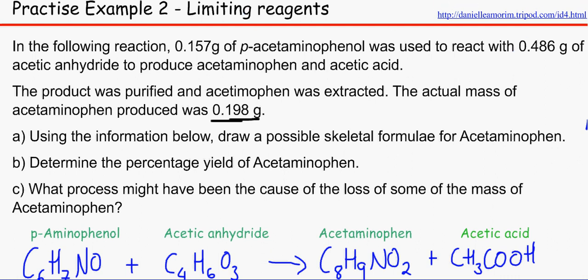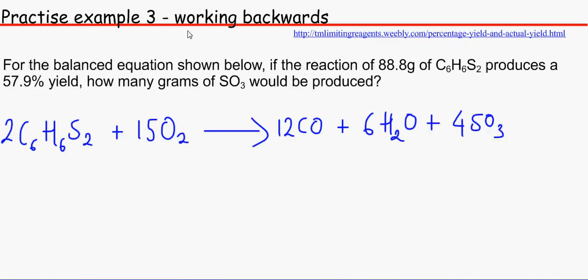This is from this website over here, so have a look at that if you want to have the worded way of doing it. There's also a different way of calculating percentage yields, and that is through the theoretical mass. That is different examples, but this is the OCR way by doing the number of moles. So the third example is we're going to work backwards.